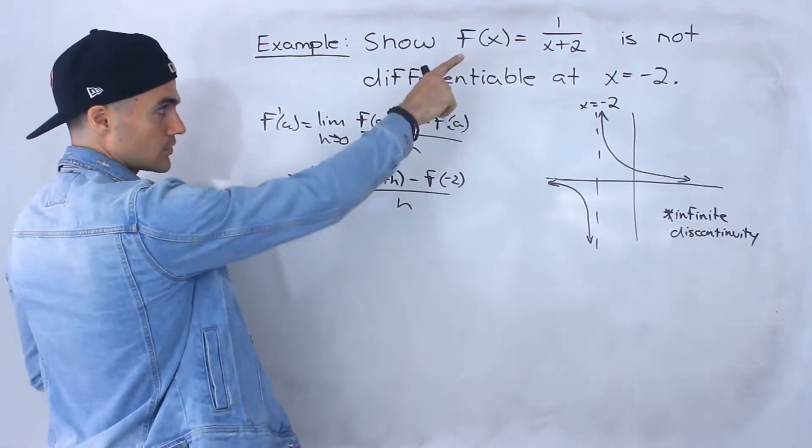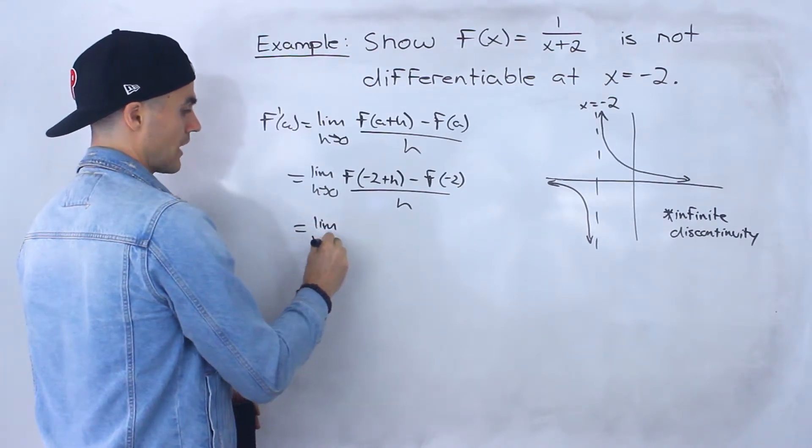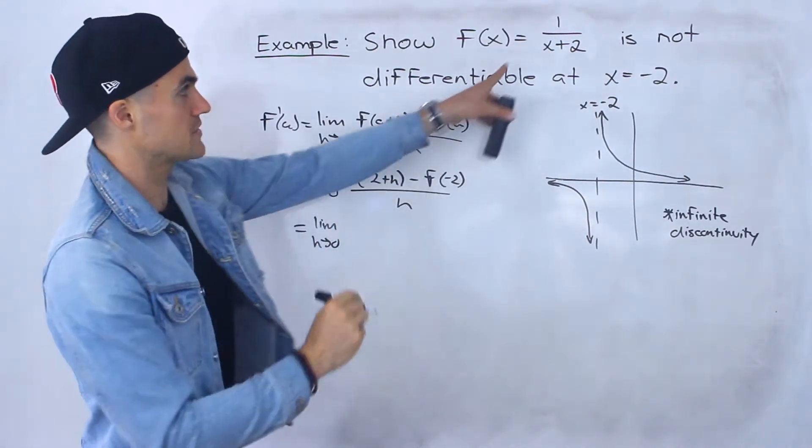If we plug in these values for this function, notice what's going to have to happen here. What happens is we'll have the limit as h approaches 0, negative 2 plus h.